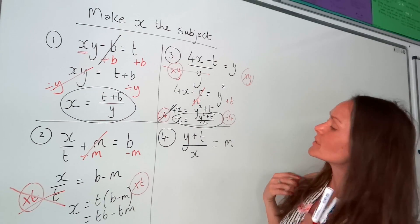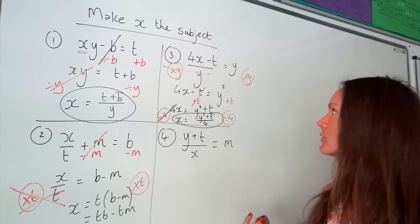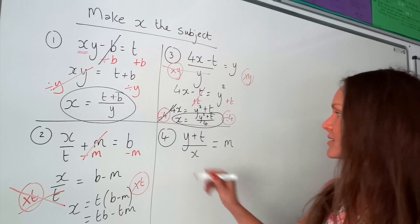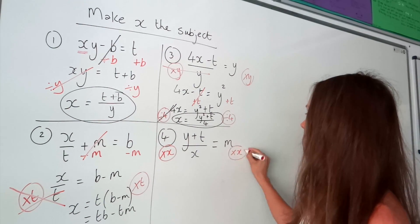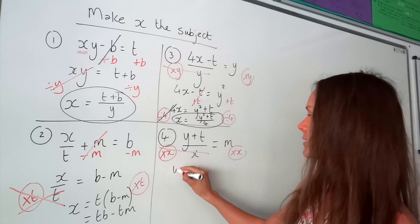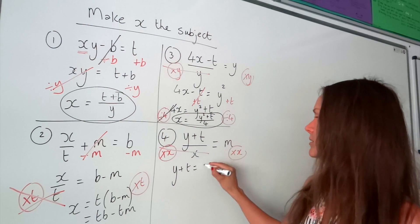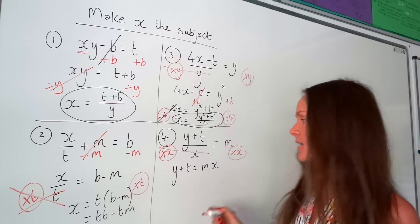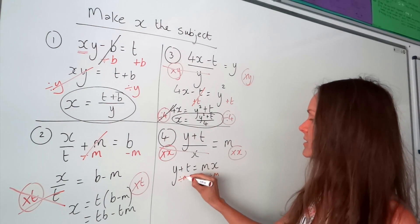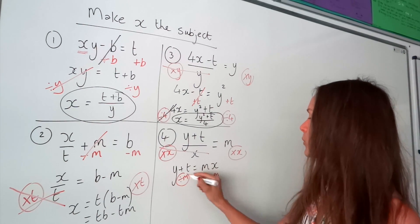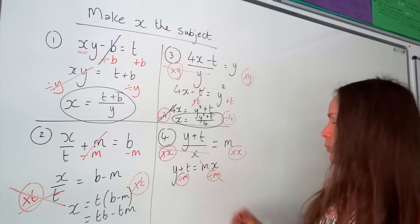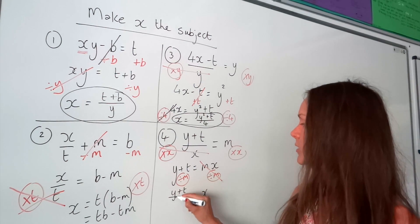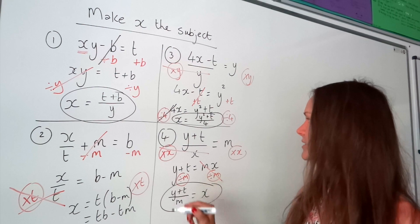On to number 4. It doesn't matter that x is in the denominator — we need to get rid of the fraction. Just like before, to get rid of a fraction you multiply by the denominator, which happens to be x. So we're going to multiply by x on both sides. The left-hand side just cancels and we're left with y plus t. On the right-hand side, m times x is just mx. But we need to get x by itself, so x is being multiplied by m. The opposite of multiplying is to divide, so we divide by m on both sides. It doesn't matter that x is on the right-hand side — m divided by m is just 1, leaving 1x. We divide all of y plus t by m, so the answer is y plus t, all divided by m.